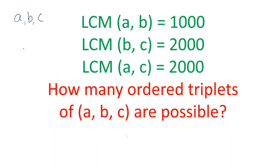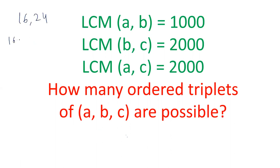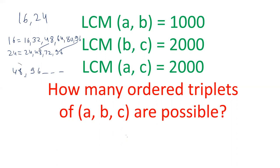Before moving forward, let's understand the concept of LCM. If we have two numbers 16 and 24, what will be the LCM? The multiples of 16 are 16, 32, 48, 64, 80, 96, and the multiples of 24 are 24, 48, 72, 96. The common multiples are 48 and 96, and the smallest — 48 — is known as the LCM.